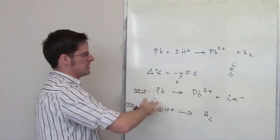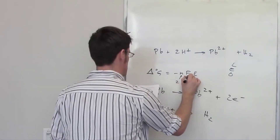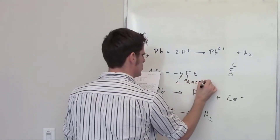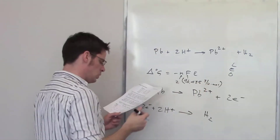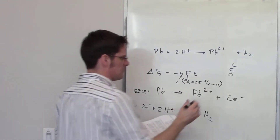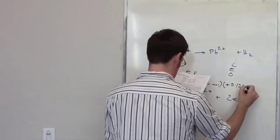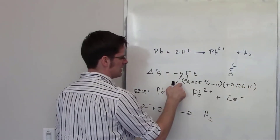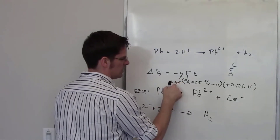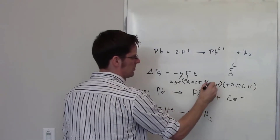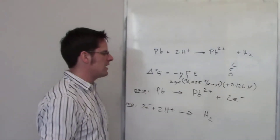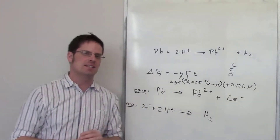Faraday's constant is equal to 96,485 joules per volt per mole, or coulombs per mole — same thing. The electrochemical potential in this problem is positive 0.126 volts. Writing down the units: two moles cancels with moles in the denominator, and volts cancel with volts. Multiplying everything through, you'll be left with a final answer in joules, which is the delta G for this process.